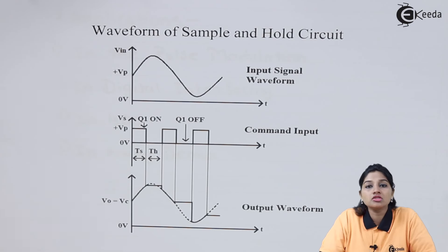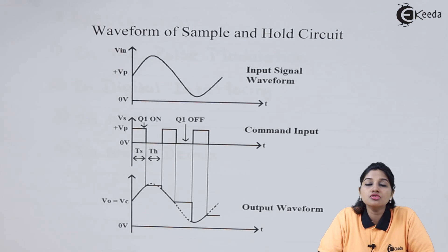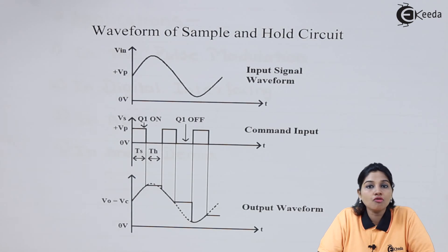As the capacitor holds charge for a certain period of time, the capacitor is required to be a leak-proof capacitor. Therefore, in most sample and hold circuits, Teflon capacitors or polyester capacitors are used in the circuit so that they can avoid leaking of charge and the voltage value can be held for a proper period of time.